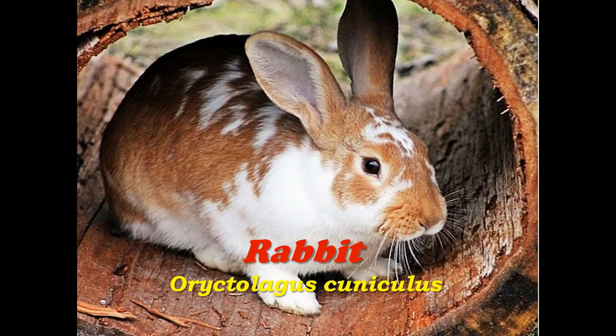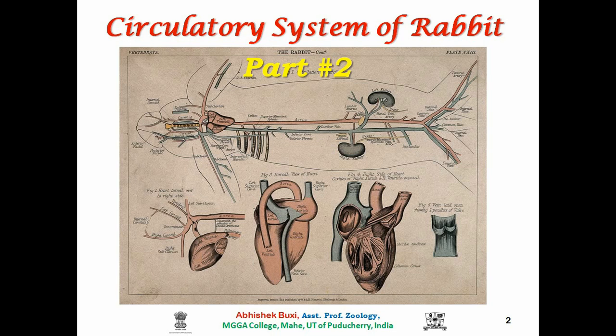This is my second lecture on the circulatory system of rabbit. In my previous video lecture, circulatory system of rabbit part 1, I discussed detailed information about the composition of rabbit's blood and the anatomical structural details of rabbit's heart. Today I am going to discuss the blood vascular structures, the vessels of rabbit and their organization, how they are distributed and where they are located within the rabbit's body.